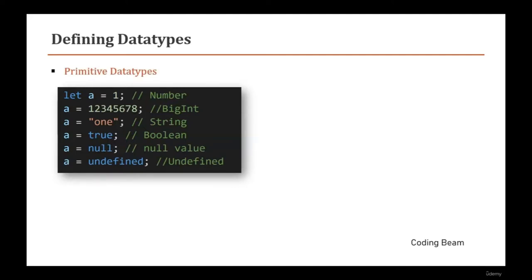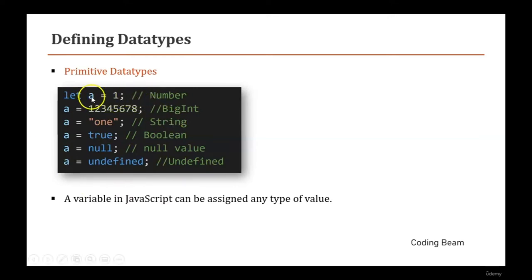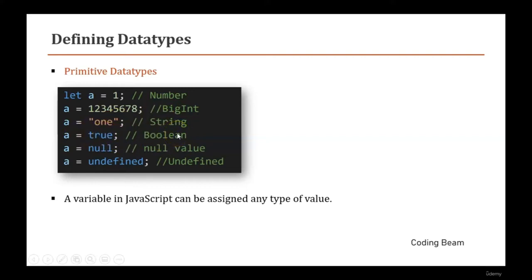Primitive types are the lowest level of data values and include string, number, boolean, null, undefined, and BigInt. If we declare a variable with a numerical digit it is a number, a very large number is BigInt, values in quotes are strings, true or false is boolean, null denotes the absence of a value, and undefined is the default value of an undeclared variable.